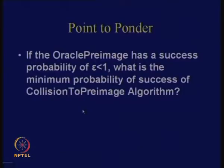The ideal hash function model means that if you need to compute a new hash value, previous hash values you have computed should not help you — each hash computation is independent. You can ponder on this: if the oracle preimage has a success probability of epsilon which is less than 1, then what is the minimum probability of success of the collision to preimage algorithm?